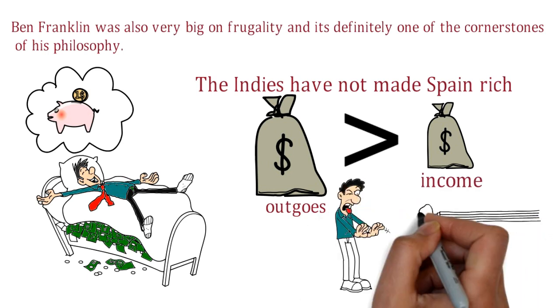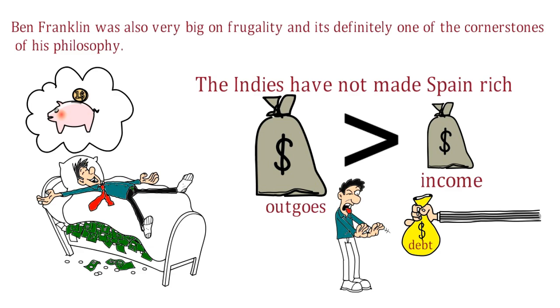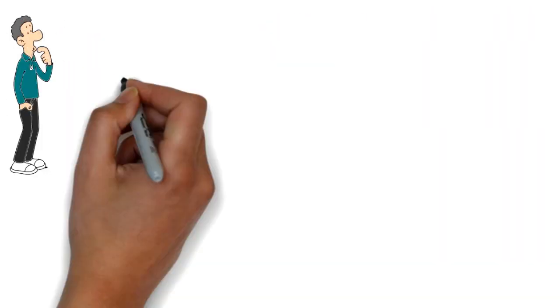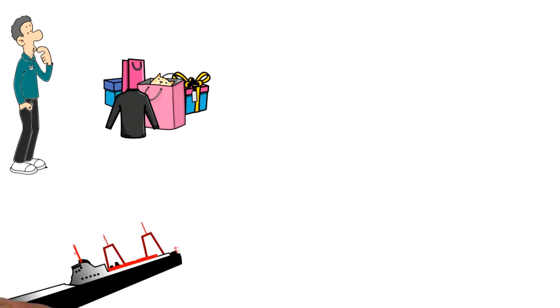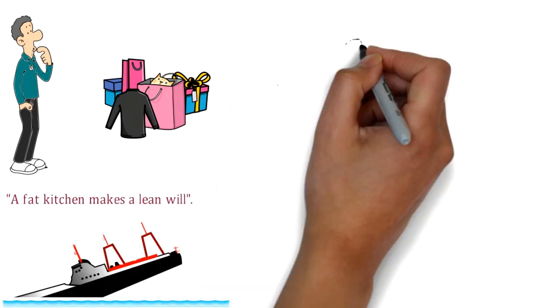Also, he was not a fan of taking on debt. To him it was the opposite of being frugal. Beware of little expenses, a small leak will sink a great ship. Also, a fat kitchen makes a lean will.